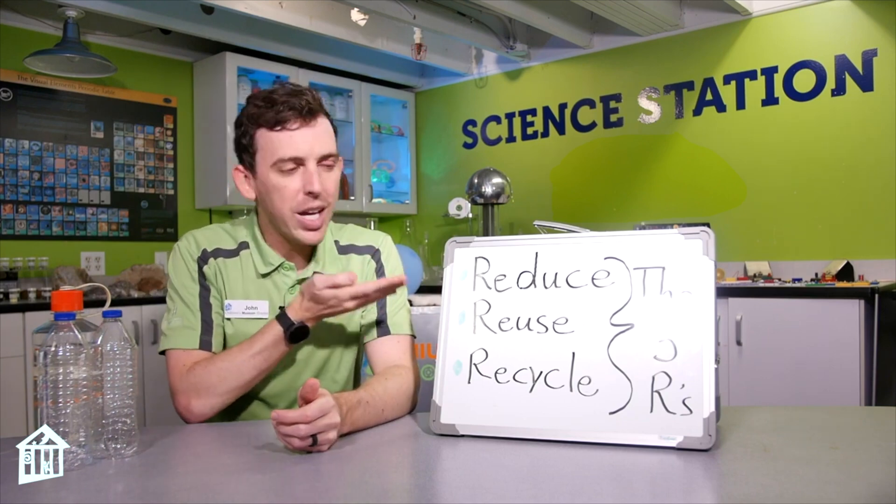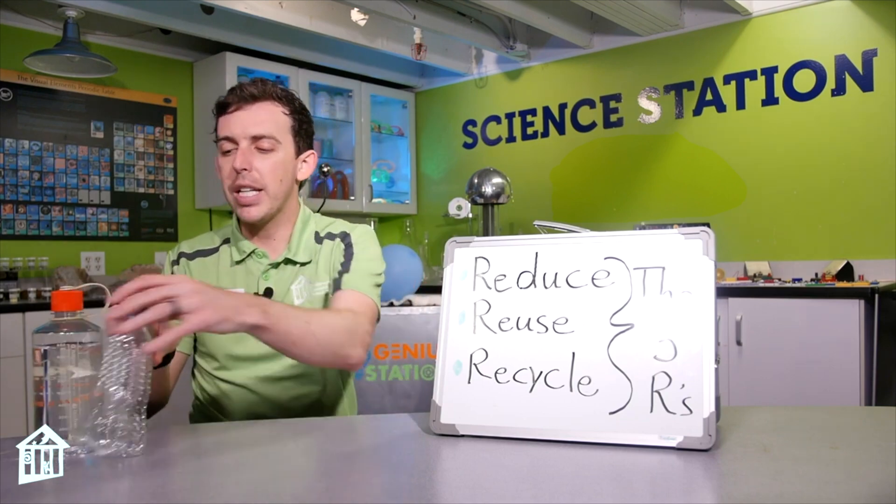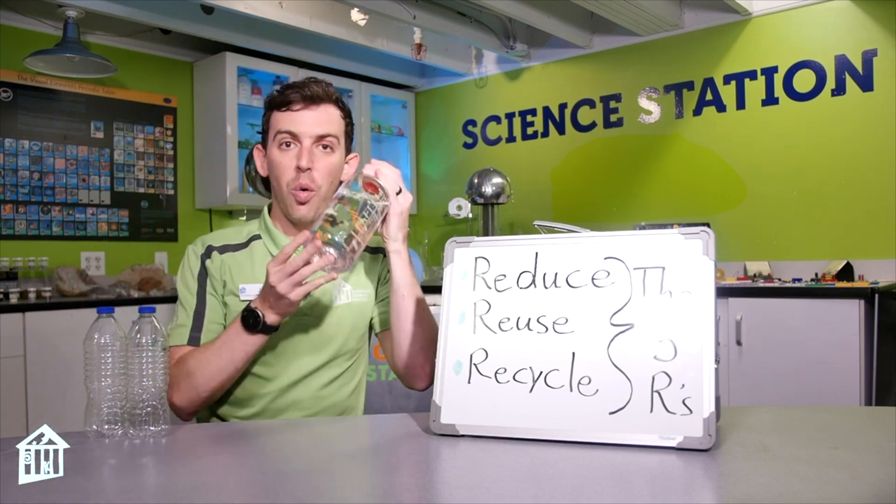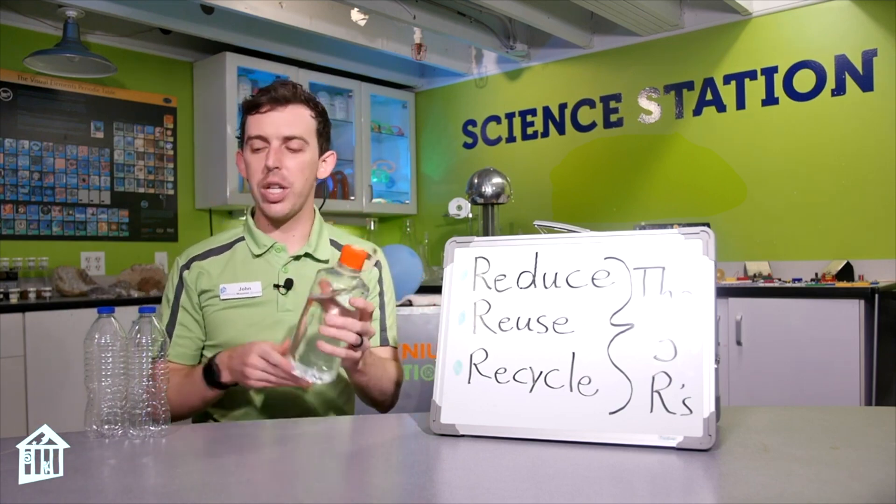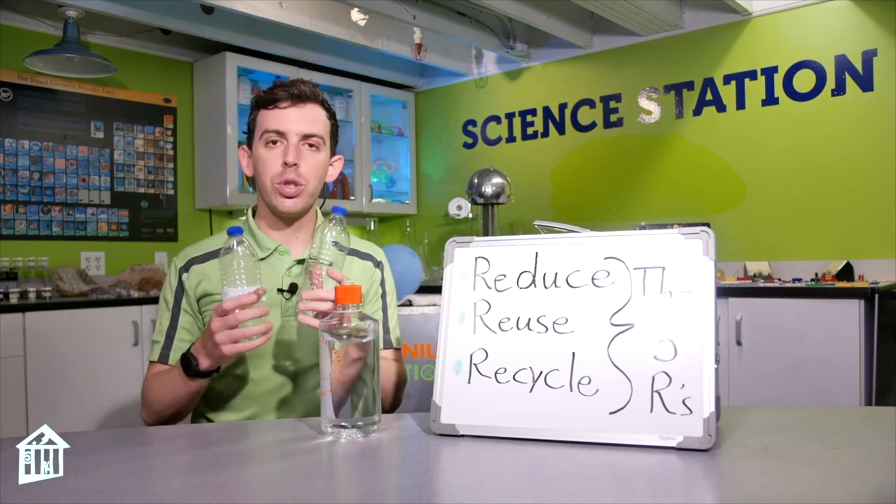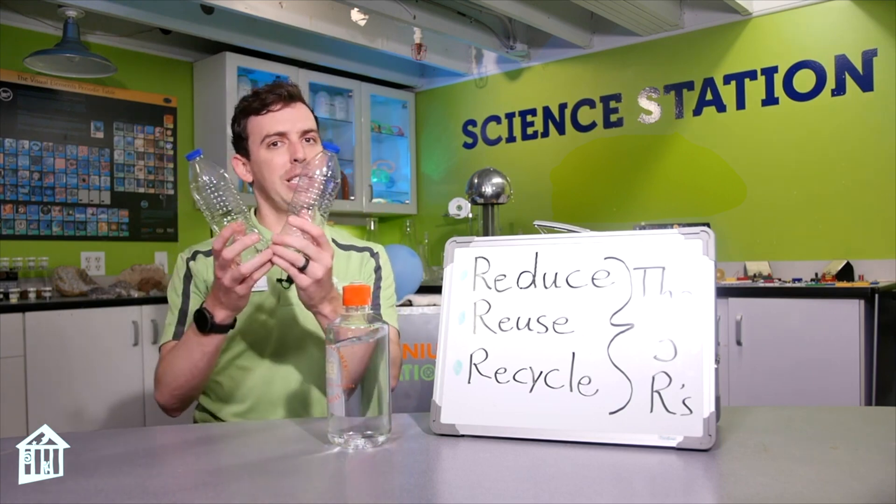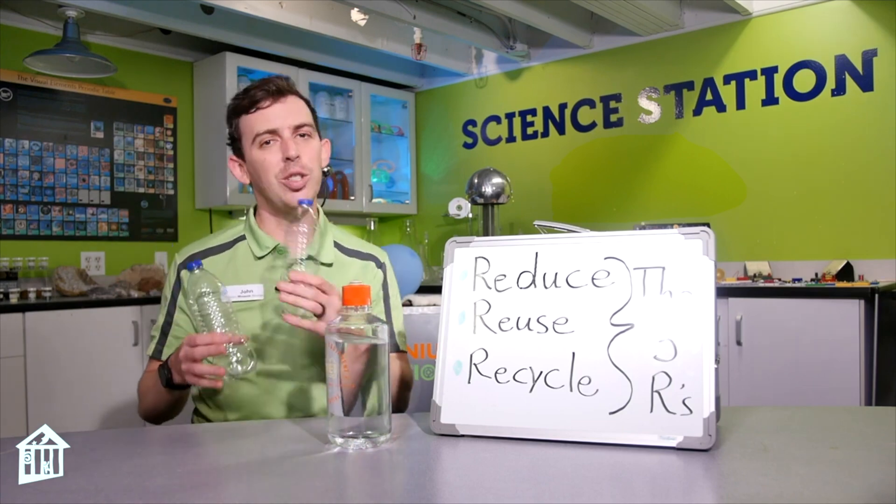And so the first one is reduce. And that's actually pretty simple. That would be instead of using two bottles, you would just use one. And that ties us right into reuse, which some things are better to reuse like this plastic bottle than this plastic bottle. And we'll learn a little bit more about which is which and what that plastic is in just a second.